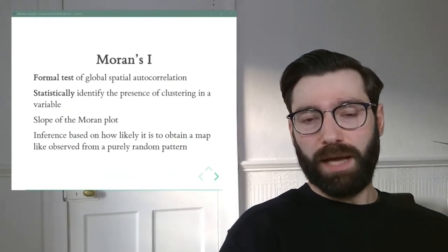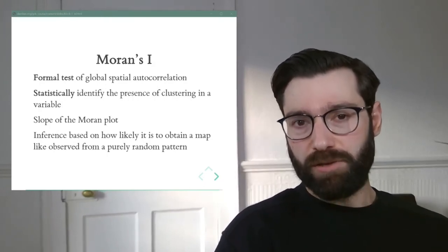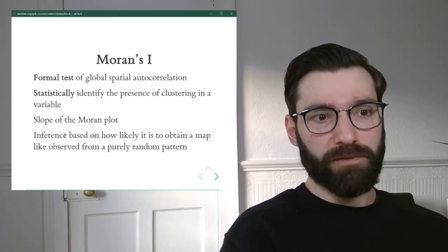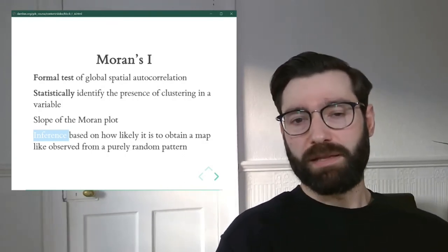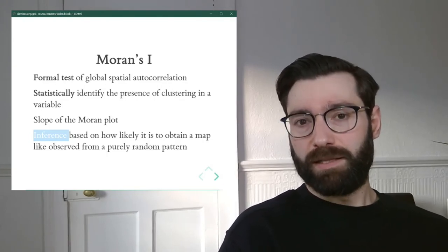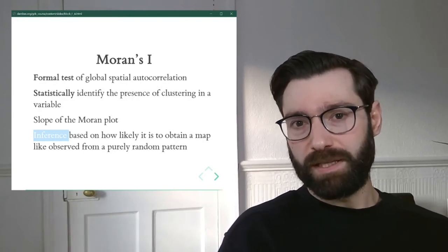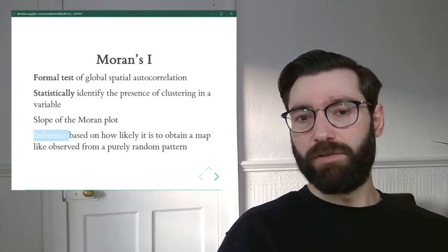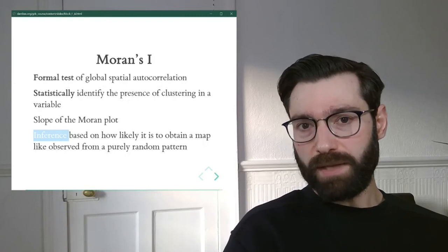In addition to calculating Moran's I, which gives us a sense of the degree to which there is clustering in our map, we are also going to be able to perform something called inference. If you're familiar with traditional statistics, inference is a family of techniques that allows us to say whether a pattern is statistically significant, or whether we have enough statistical evidence that the test we're trying to perform is different from the null hypothesis.